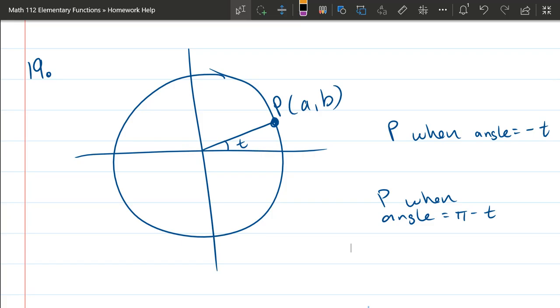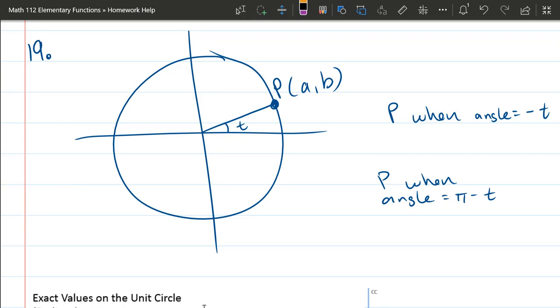So what I've done, I've just put a point on the unit circle. I did choose it in quadrant one, but it doesn't actually matter what quadrant this point's in. I'm not assuming A or B are positive or negative or anything. So first thing we're going to try to do is think about what happens when the angle goes from t to negative t.